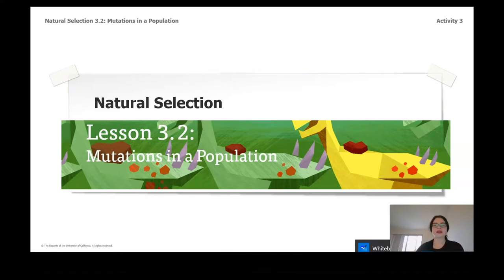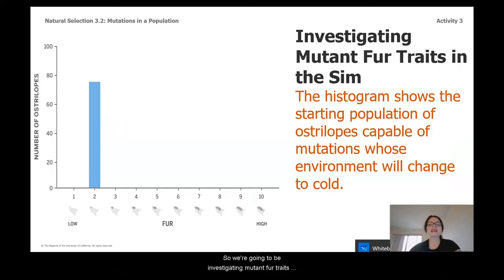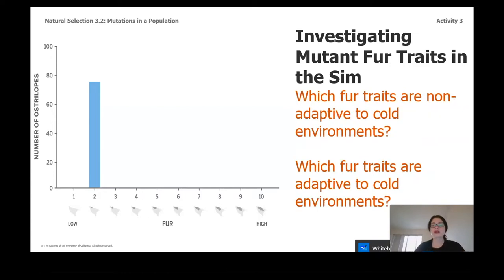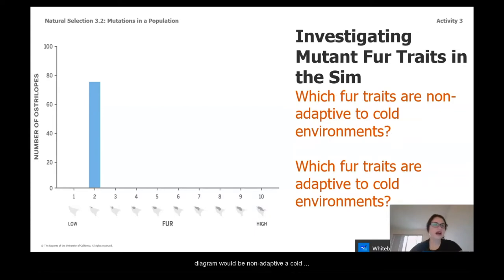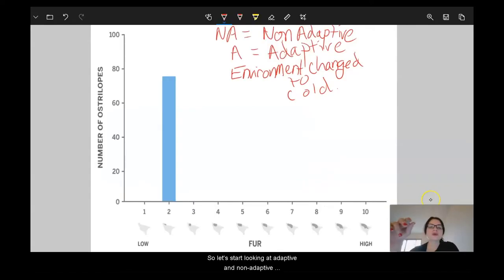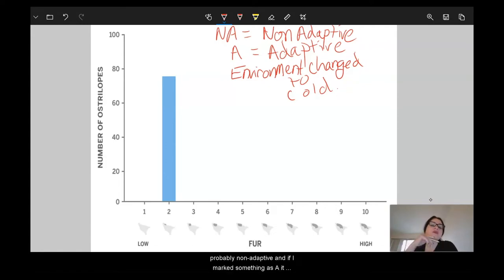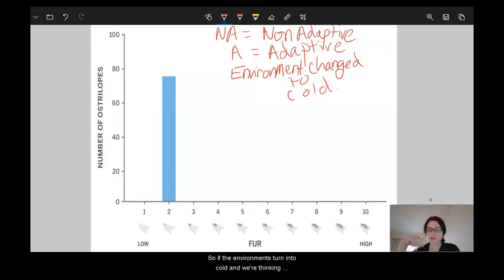We're going to be investigating mutant fur traits in the sim. This population is a starting population of ostrilopes who are going to be able to mutate, and their environment will change to cold. Think for a moment: which fur traits shown on this diagram would be non-adaptive to a cold environment, and which would be adaptive? If I mark something as NA, that means the trait was probably non-adaptive; if I mark it as A, it means adaptive.